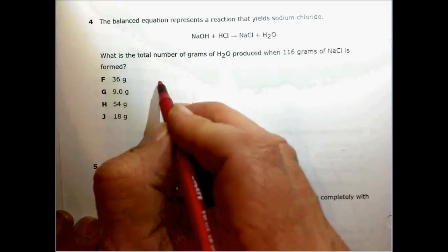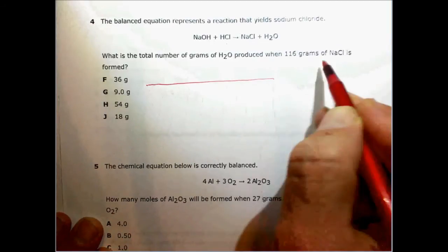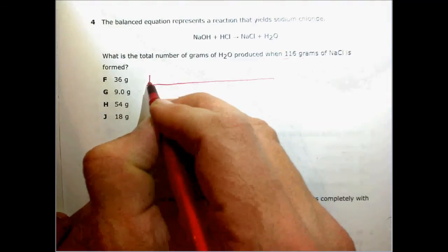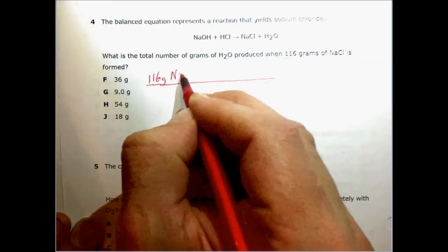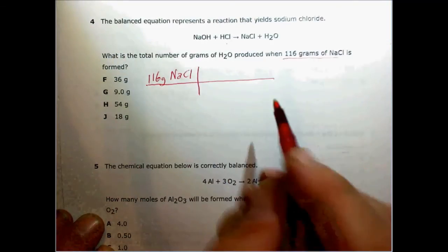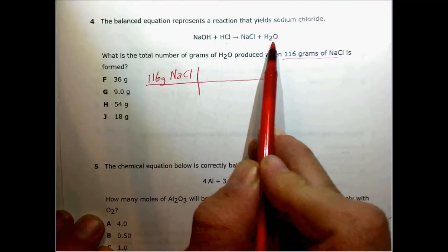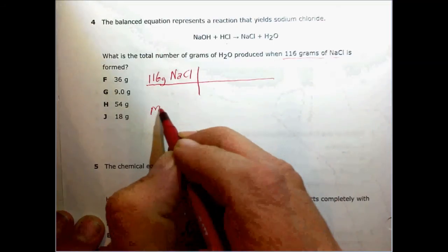So this is a stoichiometry question. The first thing that we need to do is write down our basis, which is 116 grams of NaCl. Now, since we can't convert between NaCl and water without first converting to moles, we need to get the molar mass of NaCl.